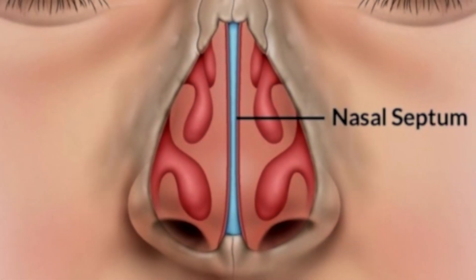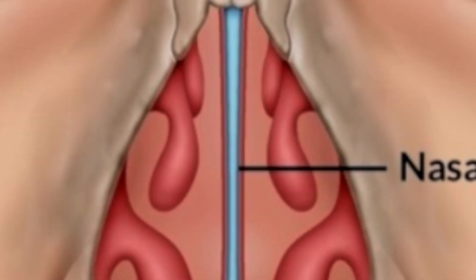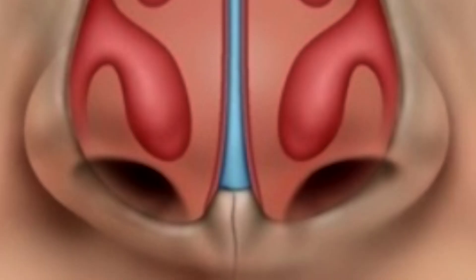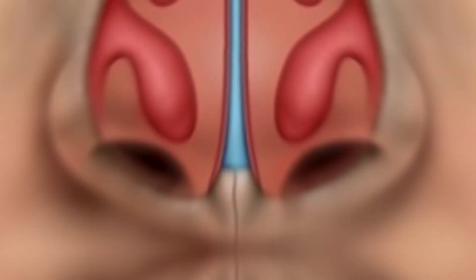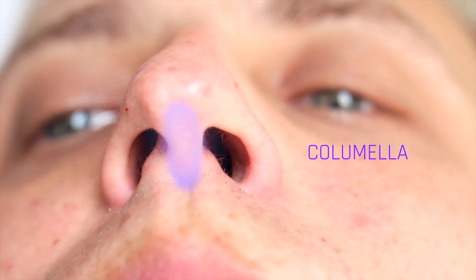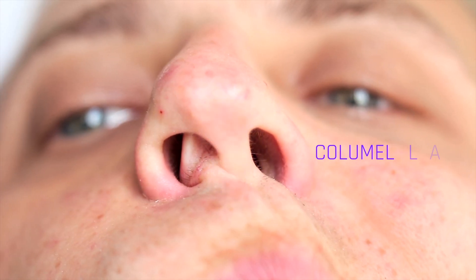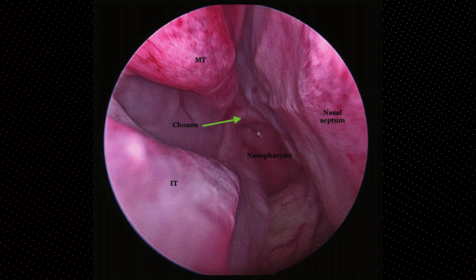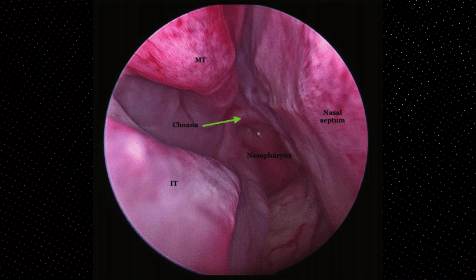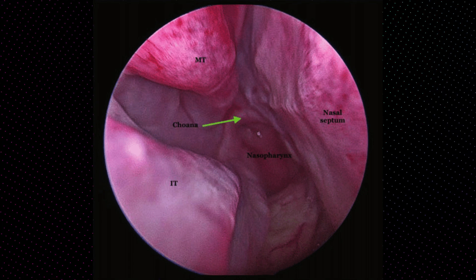The nasal septum divides the nasal cavities, and it extends from the base of the skull down to the floor of the nose. You can easily see the front portion of the septum, which starts in an area known as the columella and separates the two nostrils. The back of the septum extends to the back of the nasal cavities and ends at the opening of the nasal pharynx.